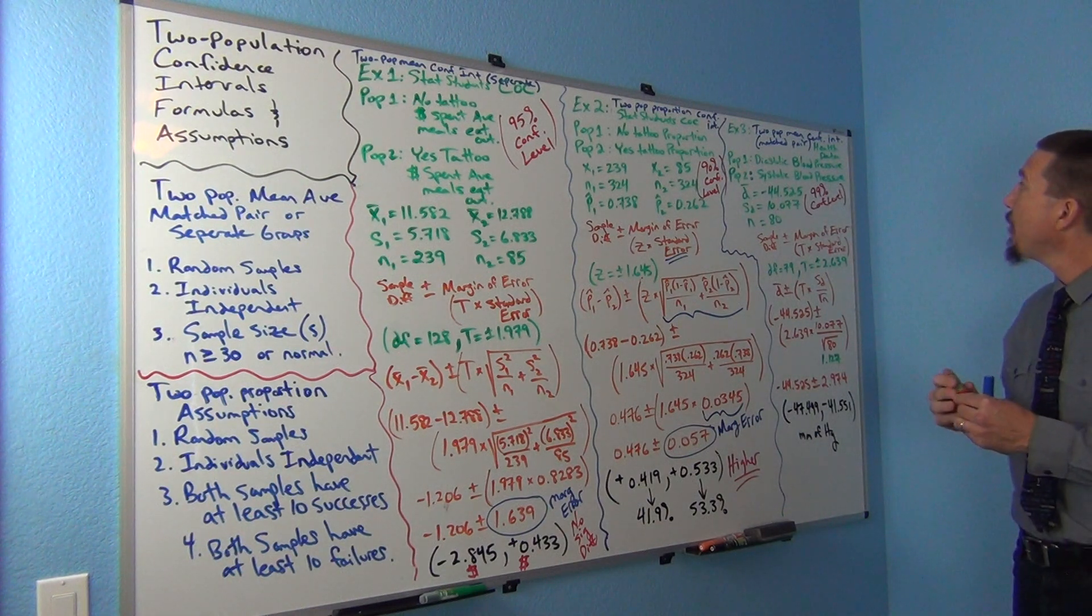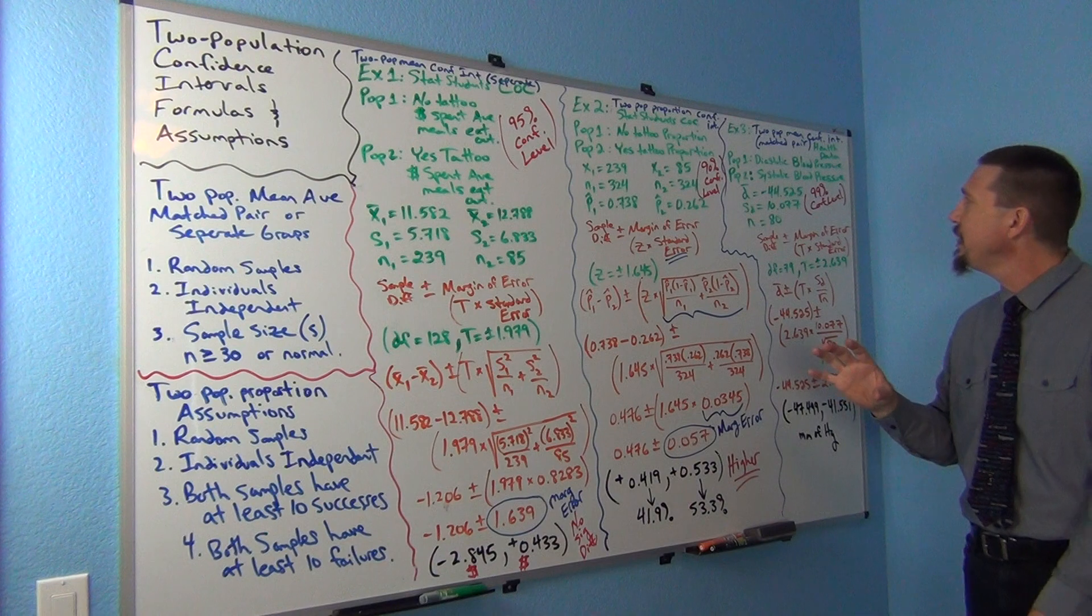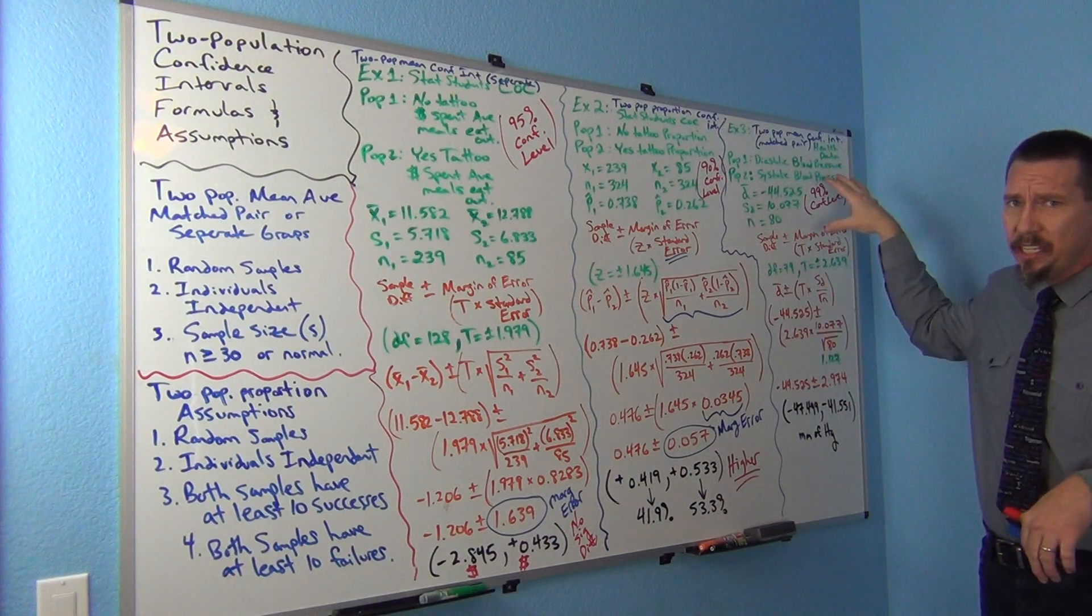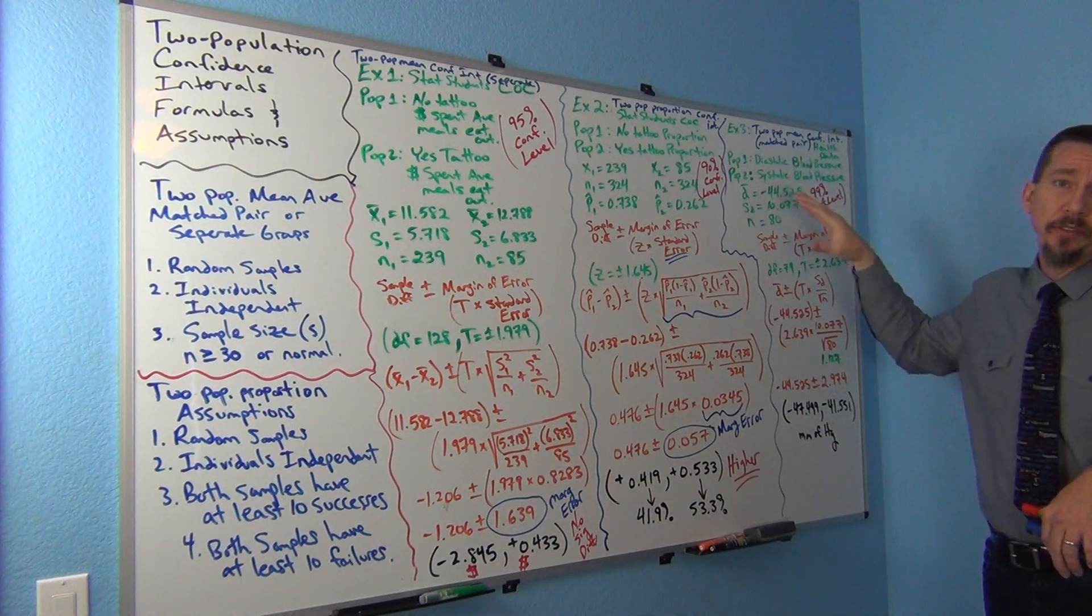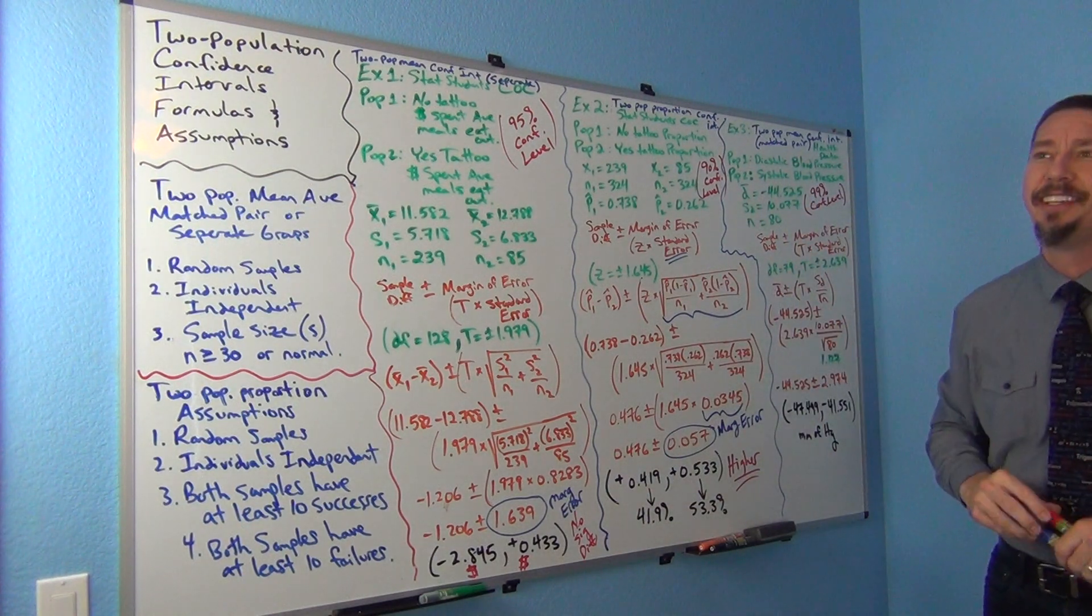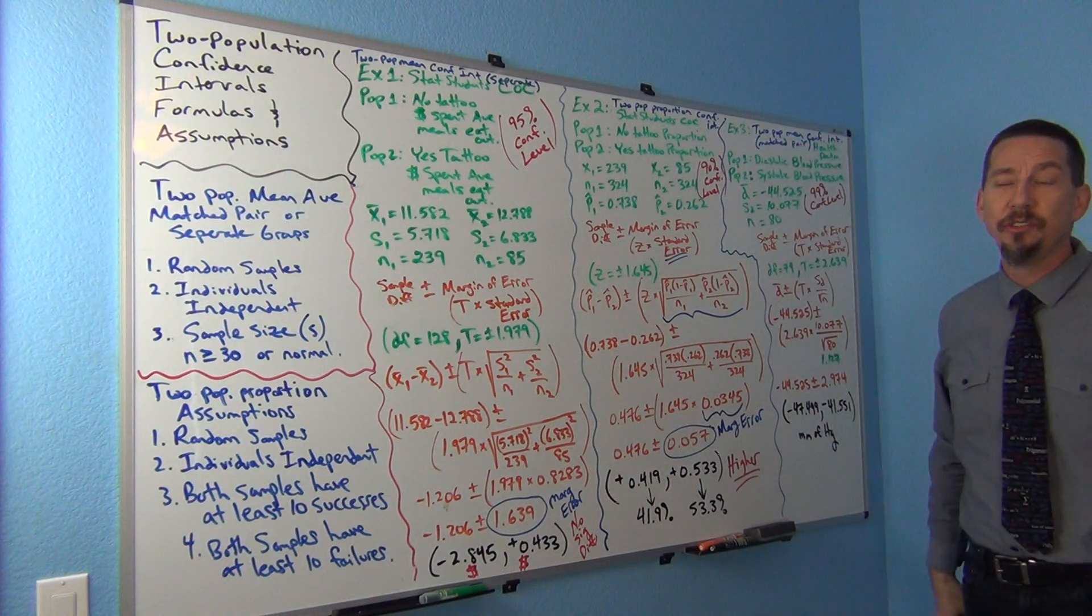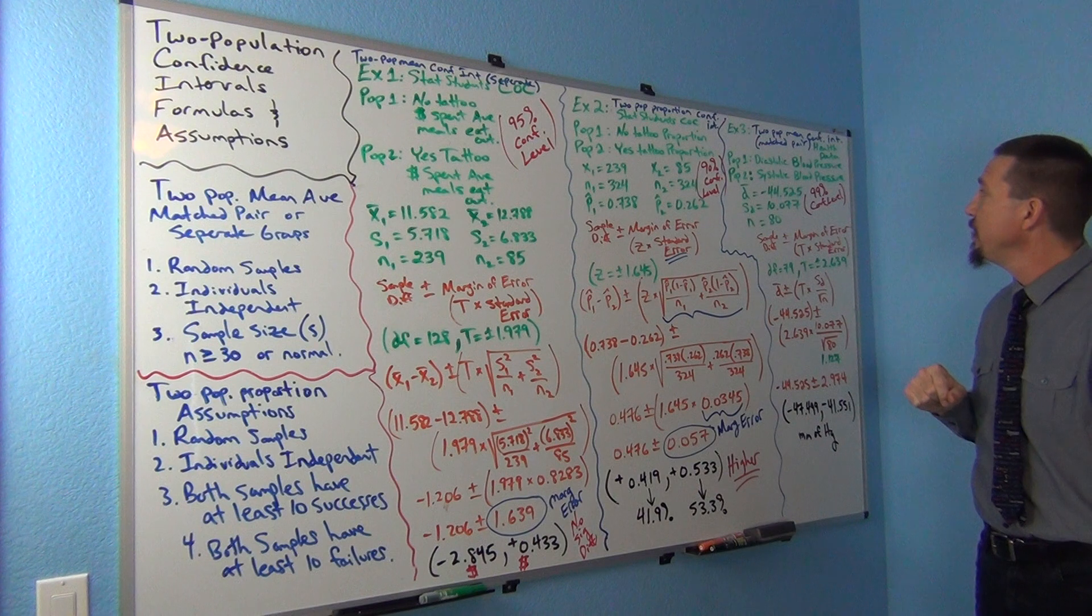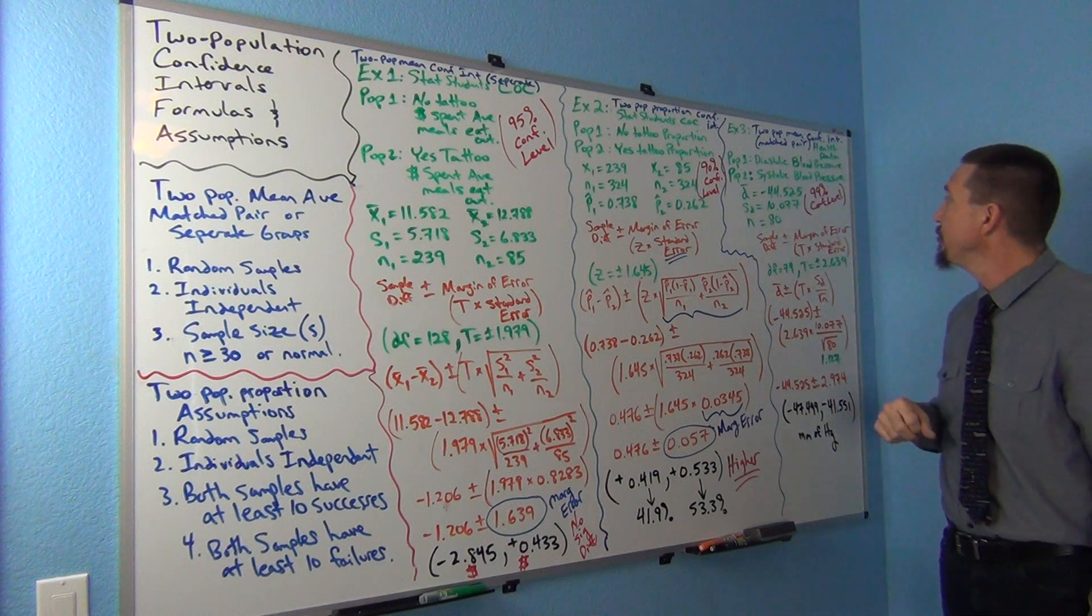So this is our two population mean. Now I'm doing a matched pair. Now a matched pair is really kind of tricky. A lot of students have trouble with it. Basically, the idea is it's sort of like the same people measured twice. So I took a random sample of 80 adults, and I basically looked at their diastolic and systolic blood pressure. Remember, when you take your blood pressure, by the way, very important, take your blood pressure. High blood pressure, very dangerous. So you get two numbers. The systolic blood pressure is the high number, and the diastolic is usually the low number.